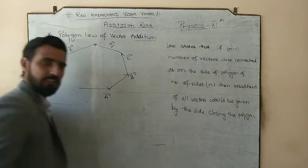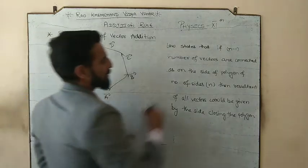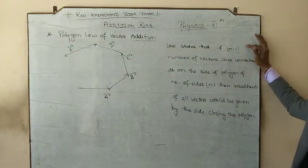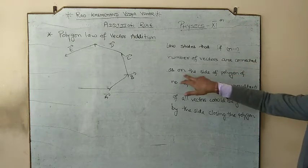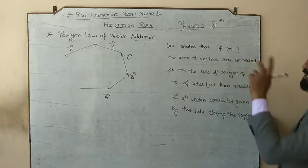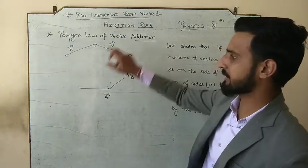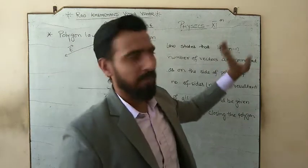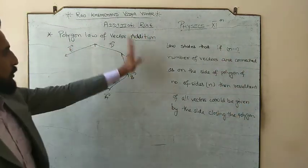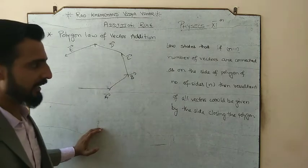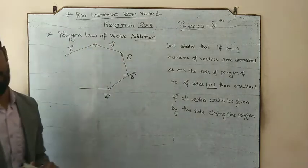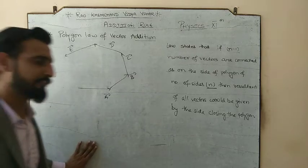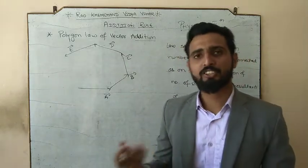So what does the polygon law say? If we have n−1 number of vectors connected as the sides of a polygon of n sides — so if we have 5 vectors, that is n−1, meaning n = 6, so they form a hexagon — the resultant is given by the last or closing side. If we have 4 vectors, they work on a pentagon. The resultant of all vectors is given by the closing side of the polygon.